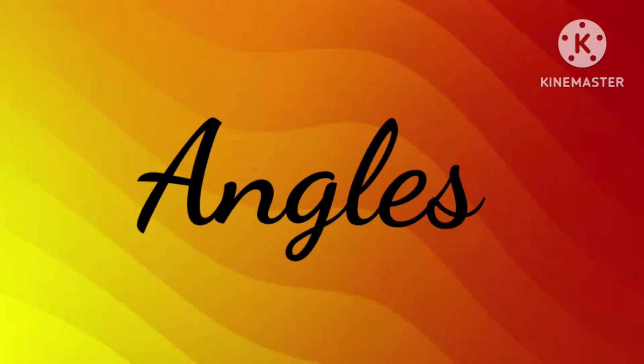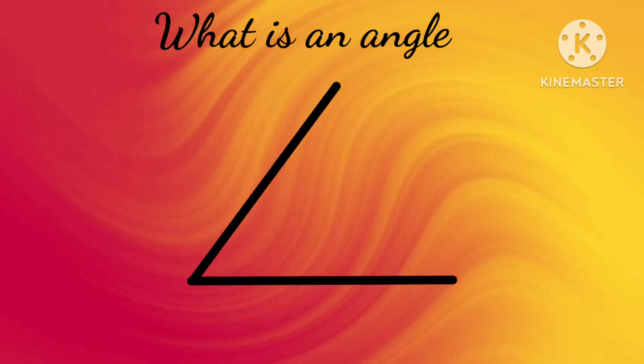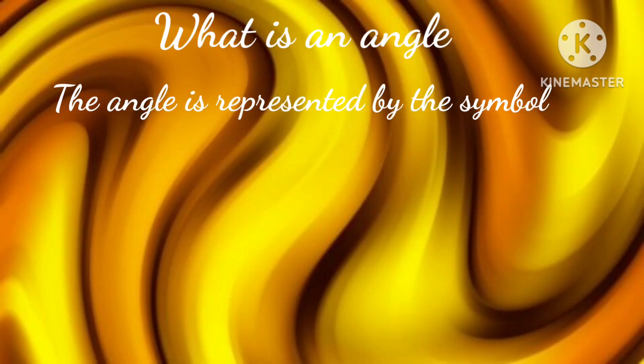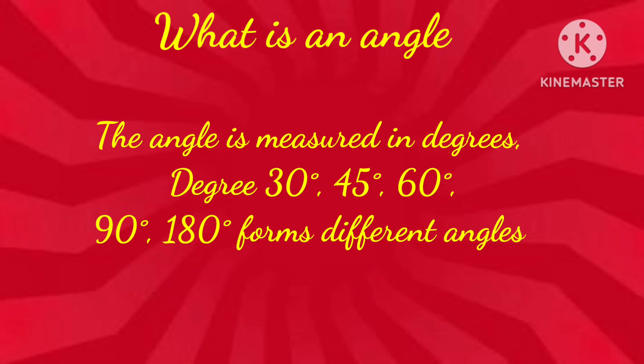In this video, we will learn the meaning of angles. An angle is formed when two rays are joined together at a common point. This common point is called a node or vertex. The angle is represented by the symbol and is measured in degrees.